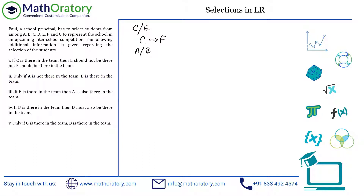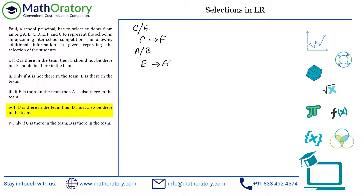The third condition says: if E is there in the team, then A is also there in the team. Very similar to the C implies F relationship. So let's write this down: E implies A.